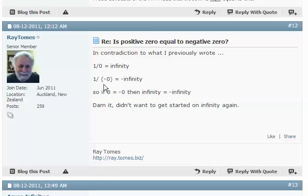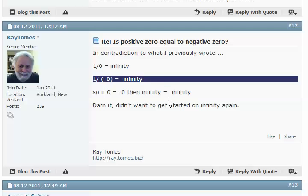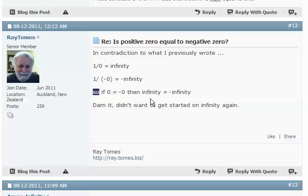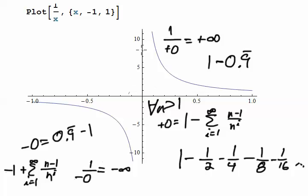Now Roy Tombs has already made the basic point that I'm making. The one divided by zero is infinity but one divided by negative zero is negative infinity. And yeah one divided by positive zero is infinity so if zero equals negative zero then infinity equals negative infinity.